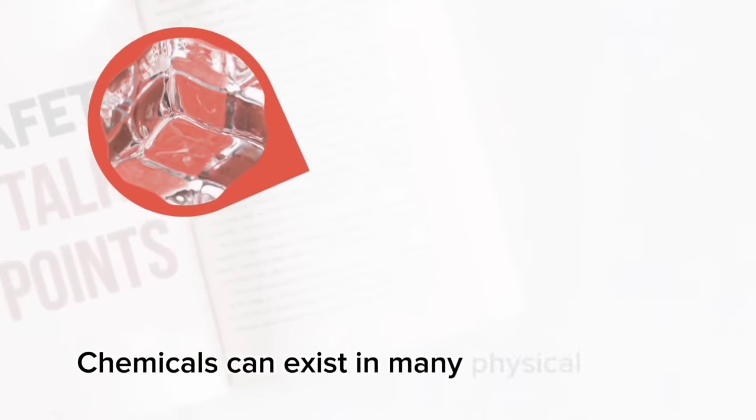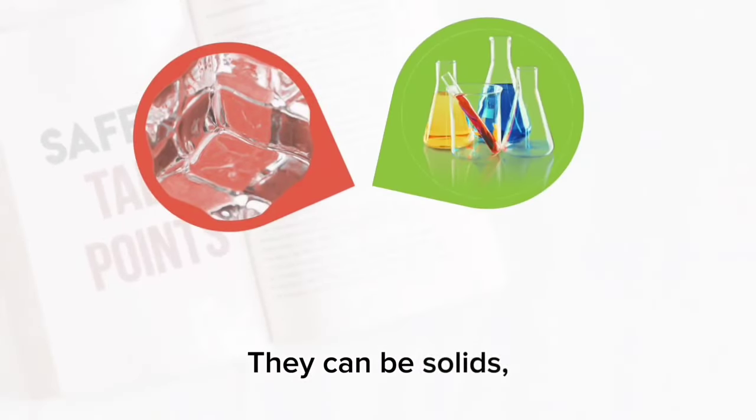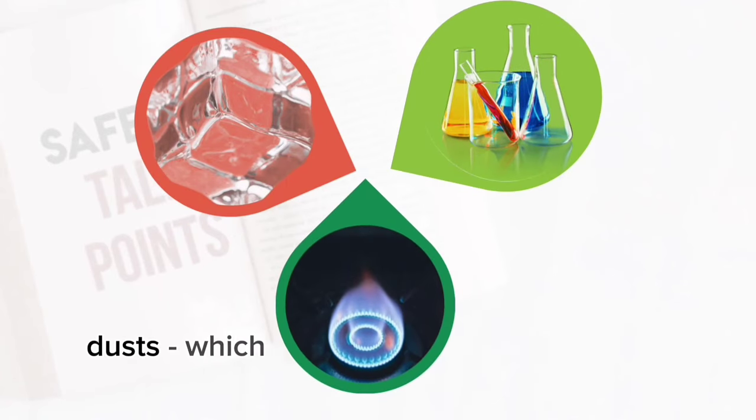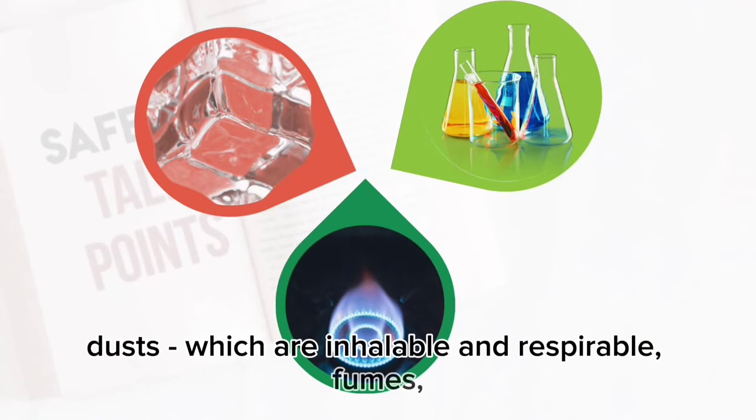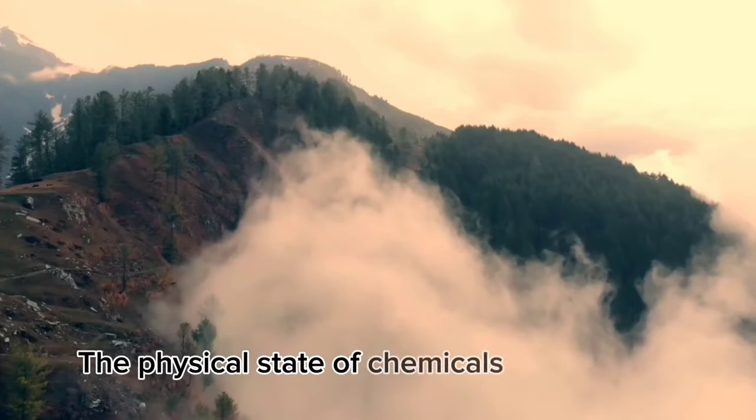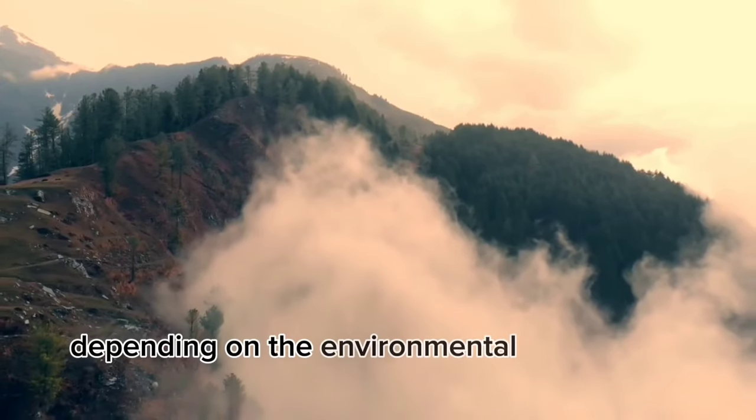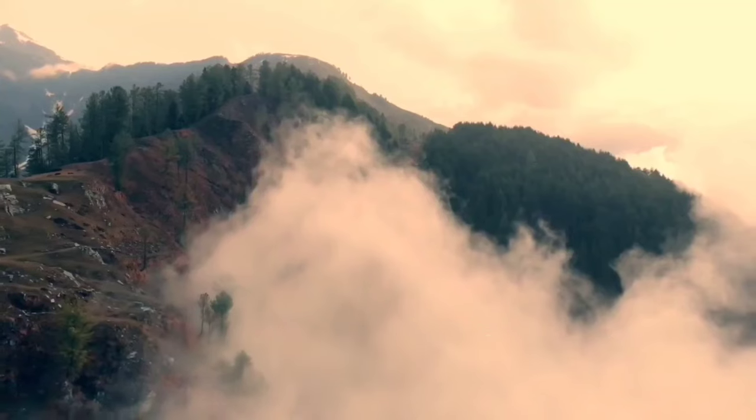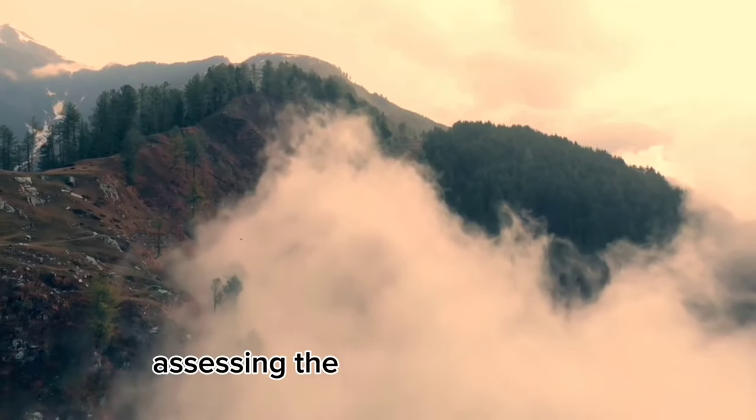Chemicals can exist in many physical states. They can be solids, liquids, gases, dusts which are inhalable and respirable, fumes, vapors, and mists. The physical state of chemicals may change, depending on the environmental factors and/or processes. They are important to consider when assessing the routes of exposure.